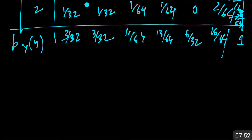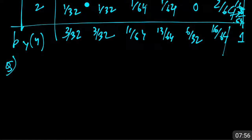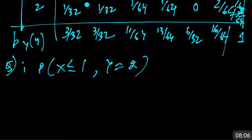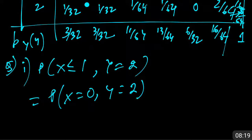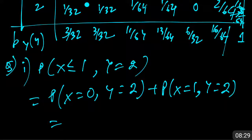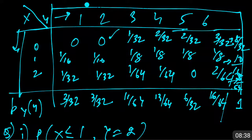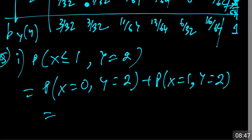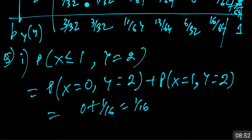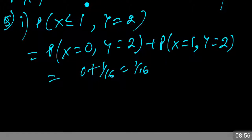Write the questions in your copies. The first question is P(X < 1, Y = 2). P(X < 1) means X can be 0 only — wait, X less than 1 gives two values: x=0 and x=1. So we need P(X=0, Y=2) + P(X=1, Y=2). P(0,2) = 0 and P(1,2) = 1/16. Therefore 0 + 1/16 = 1/16.